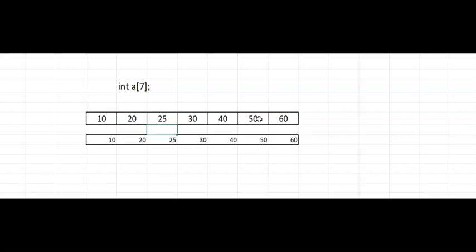That is the disadvantage of an array. Similarly, if you have to delete an element — say I want to delete 25 — I have to shift everything to the left: 30 comes here, 40, 50, 60, and the last position becomes empty. All elements have to be shifted left to delete, and all elements have to be shifted right to make space to insert a new element. This is the disadvantage of an array.